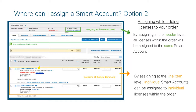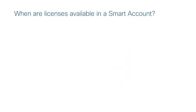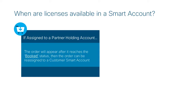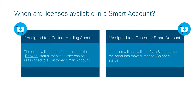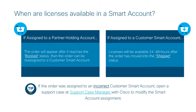Now that the assignment process is complete, we can continue with the normal ordering process. Once the order is submitted, if it has been assigned to a partner holding account, it will appear there after reaching book status and can then be reassigned to a customer smart account. If assigned directly to a customer smart account and the order has moved to ship status, it will take 24 to 48 hours for the licenses to be available.